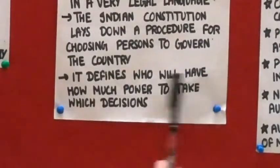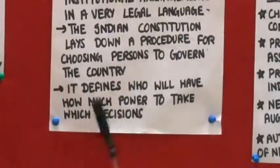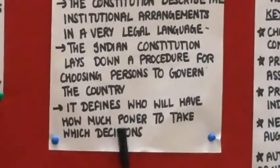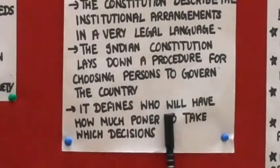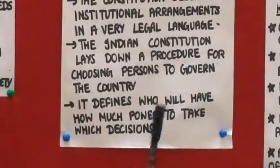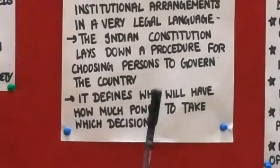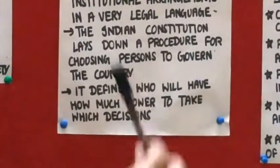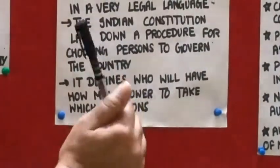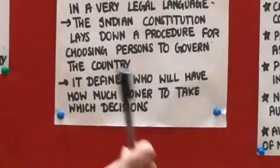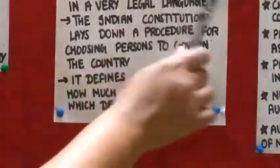It defines who will have how much power to take which decisions. In our constitution, three lists are given. The first is the Union List — subjects that will be solely handled by the central government. The second is the Concurrent List — subjects where decisions can be taken by both the central and state governments. The third is the State List — subjects solely handled by the state government. This is the division of power between the state and central government.